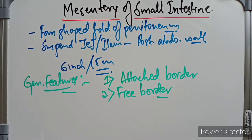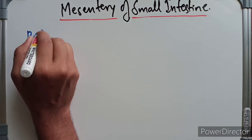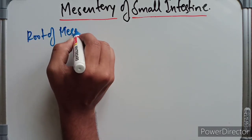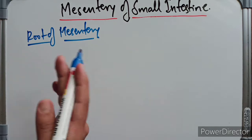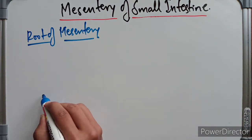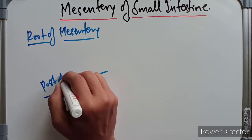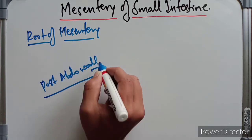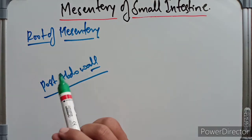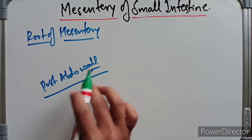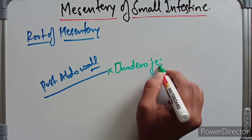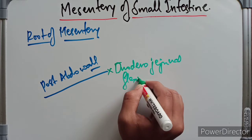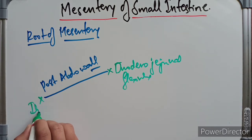Now let's look at the root of the mesentery. The attached border is attached to an oblique line along the posterior abdominal wall, extending from the duodenojejunal flexure to the ileocecal junction.